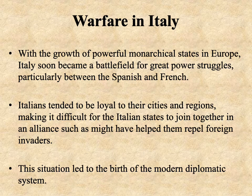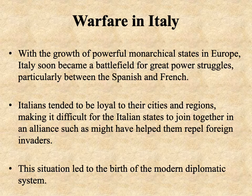Italy was very politically fragmented coming into the Renaissance, and related to this, very often subjected to a fair amount of warfare — often conflict between these city-states, but also as powerful monarchical states grew in Europe, Italy often became the battlefield between their great power struggles, particularly between the Spanish and French, not least in connection with the Kingdom of Naples. Part of the problem is that because Italy is divided into so many city-states and Italians tended to feel their primary loyalty to their cities and regions, it was very difficult for them to ever come together into some kind of alliance by which they might have resisted foreign invaders.